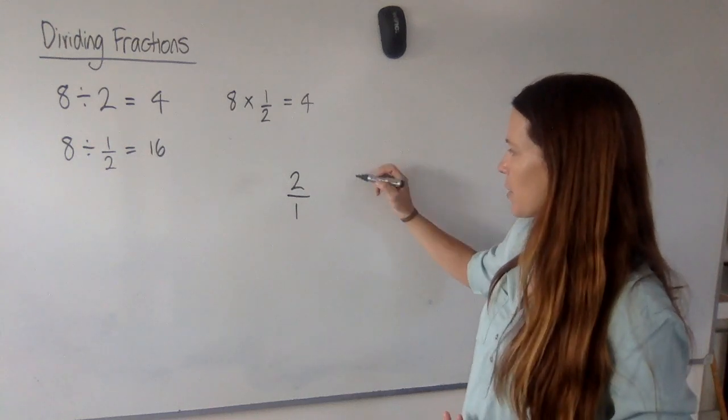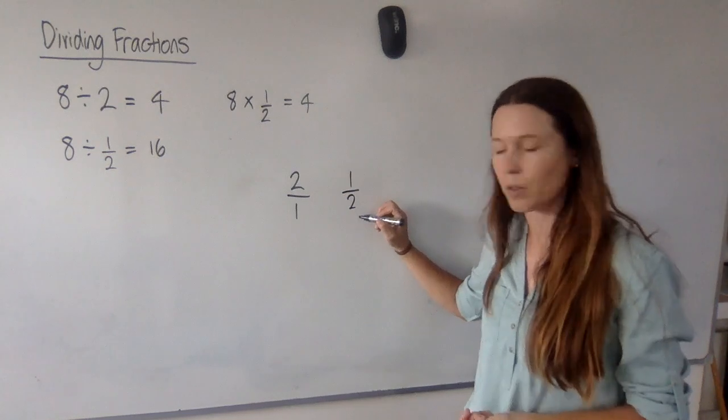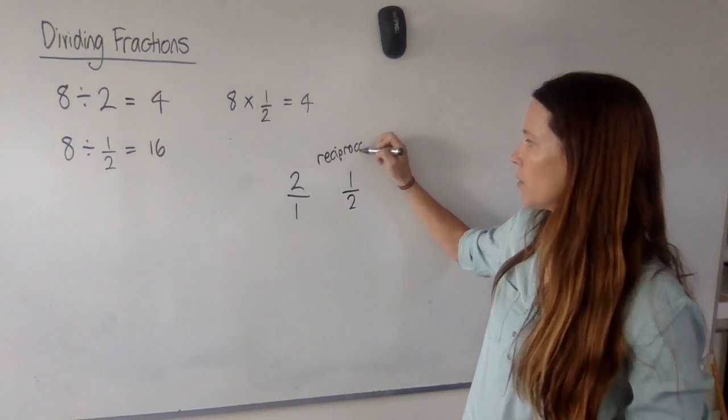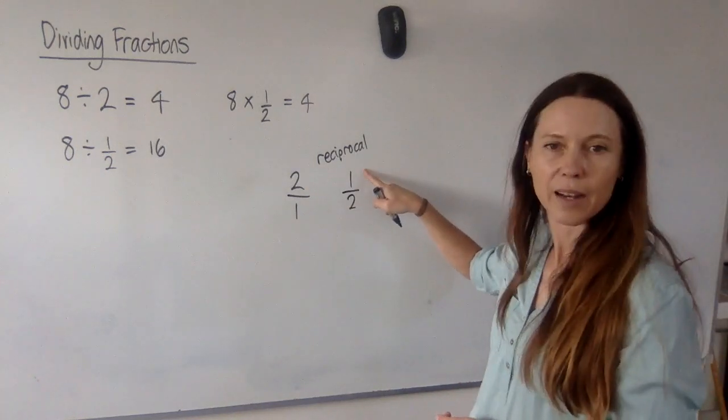Now, if I flip this number upside down, what I'm going to get is the 1 on the top and the 2 on the bottom. So, this is called the reciprocal or the multiplicative inverse. So, the reciprocal of 2 is a half.